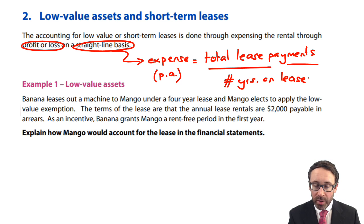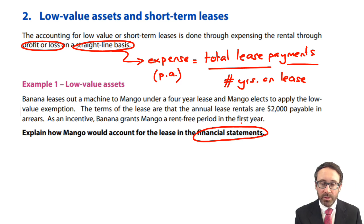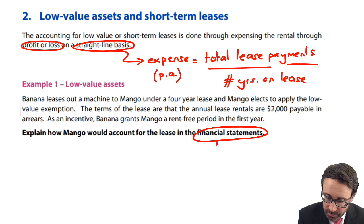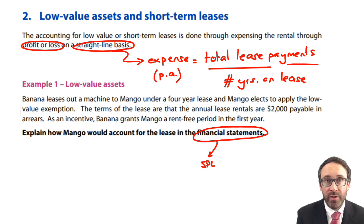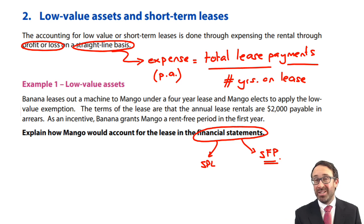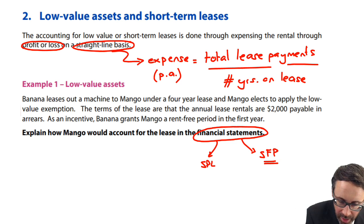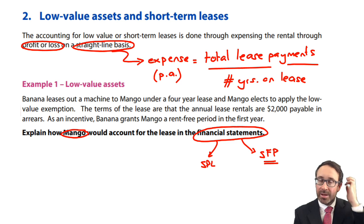The question says: explain how Mango would account for the lease in the financial statements. When we're looking at the financial statements, you'd think straight away of the statement of profit or loss. But if you start seeing things such as deposits or, as we see in this question, a rent-free period, there is some impact on the statement of financial position. The question is looking at it from the perspective of Mango — Mango must be the lessee.